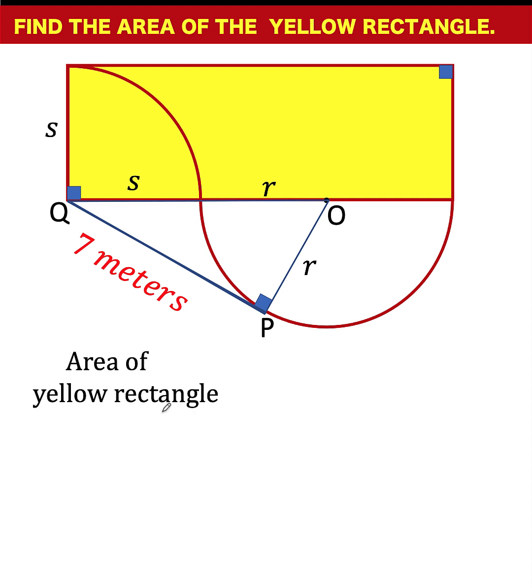The area of the yellow rectangle is equal to its length times its width. The length of this yellow rectangle is s plus r, and another radius here. So that is s plus 2r, and its width is s units. Distributing the binomial factor, we arrive at A equals s squared plus 2rs. We are going to go back to this equation later on.